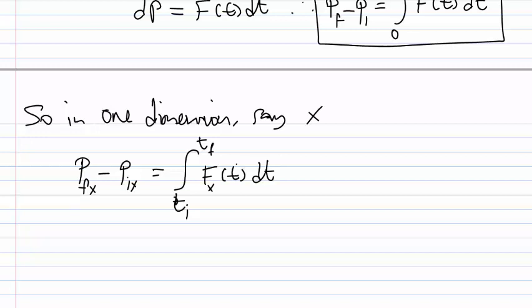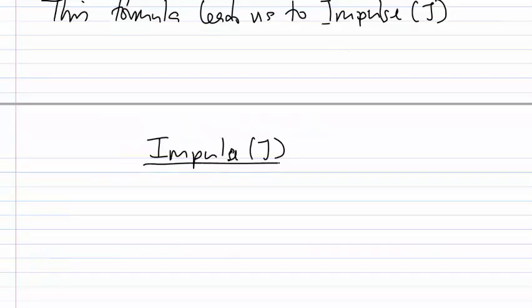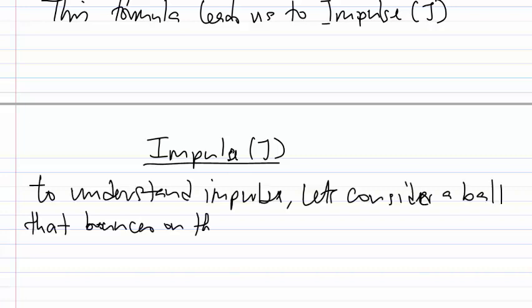This formula leads us to impulse. We use the letter J for impulse. To define impulse, let's consider an object — for example, a ball bouncing on a hard floor.